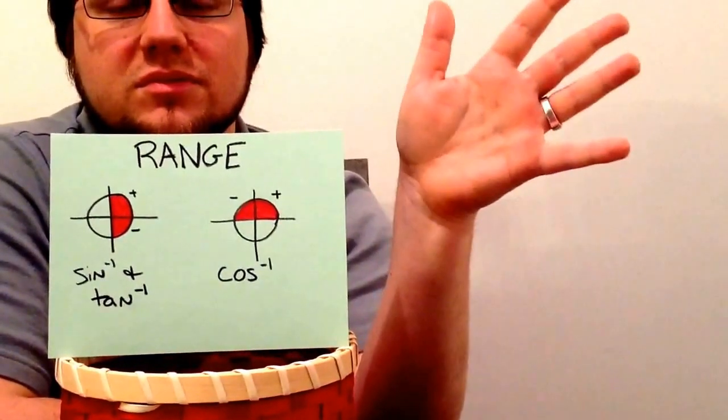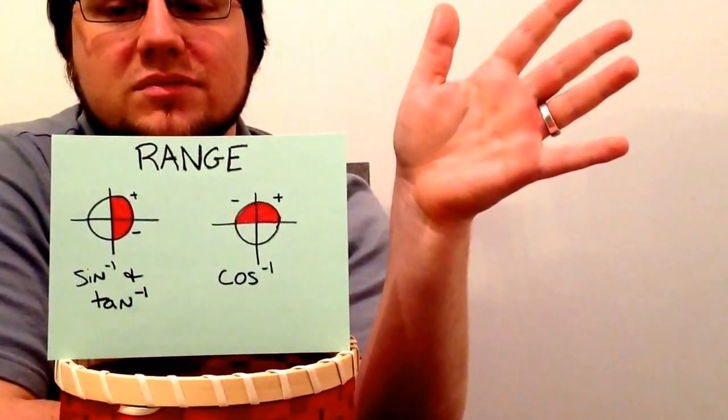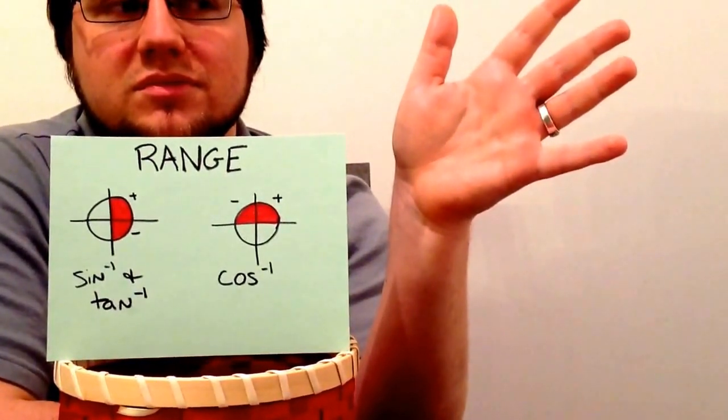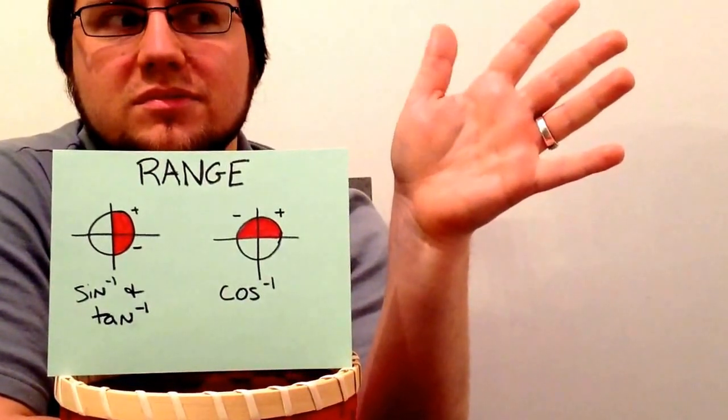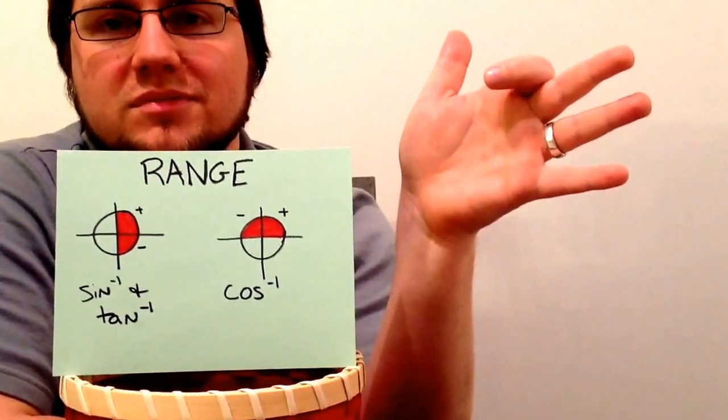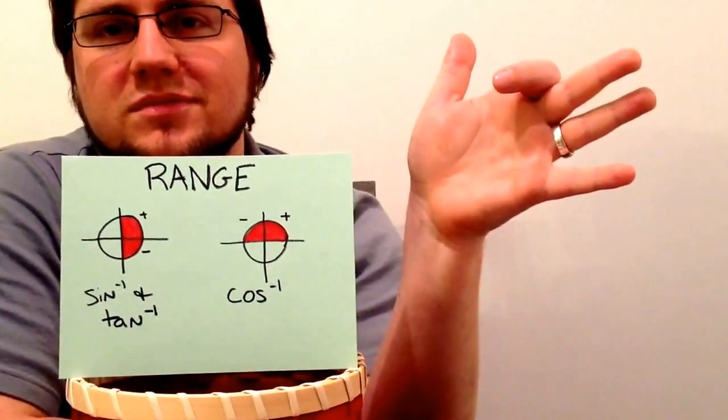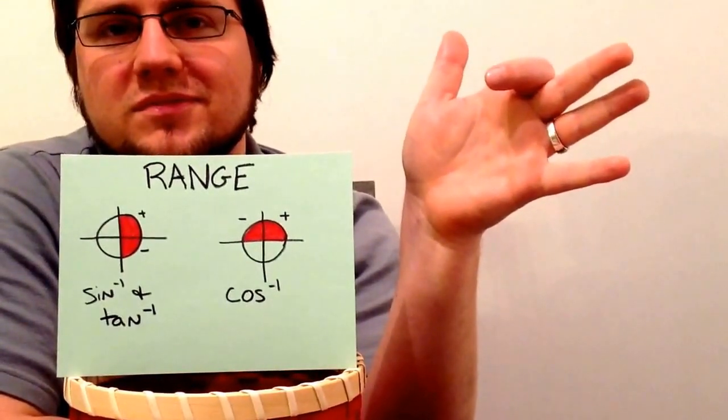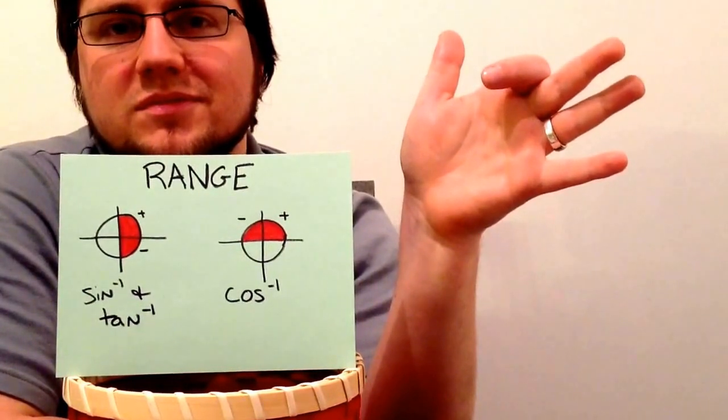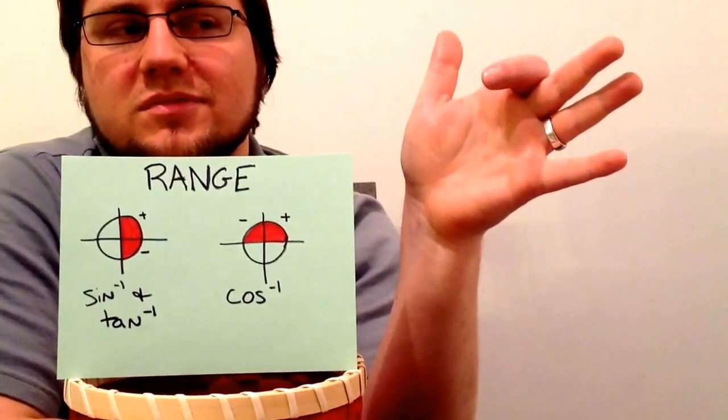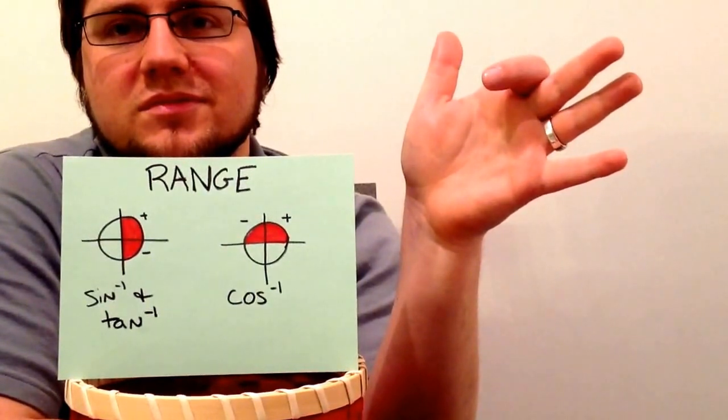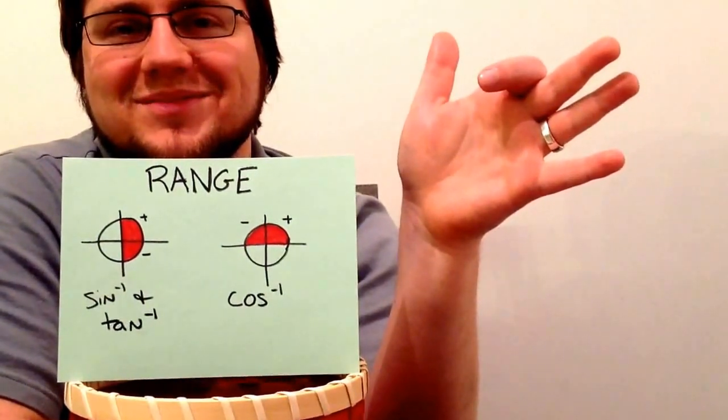And for our last one, we're going to do inverse cosine of negative 1 half. Since cosine is above, the finger that we can put down to have 1 above is our index finger. Once we have our index finger, we know our reference angle is 60 degrees. Since it is negative, it's going to be into the second quadrant. So, second quadrant, reference angle of 60 degrees, I've got 120 degrees, as well as 2π over 3.